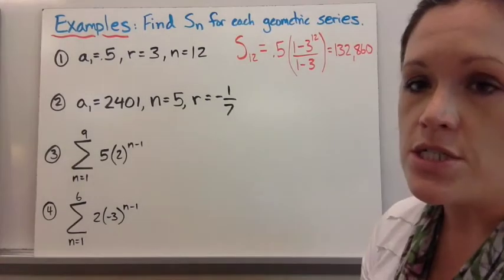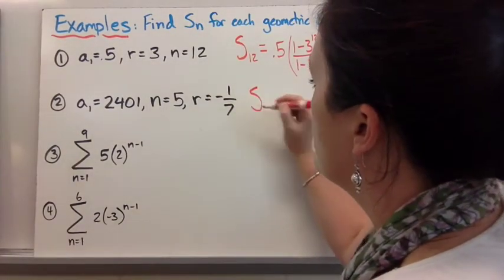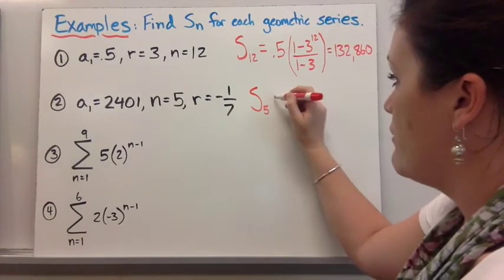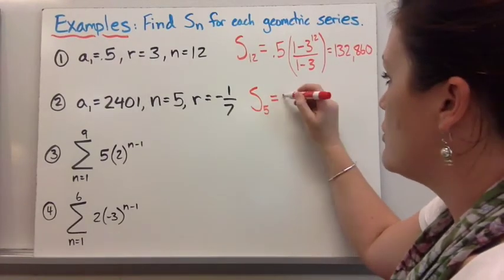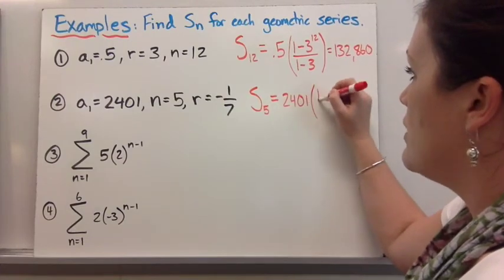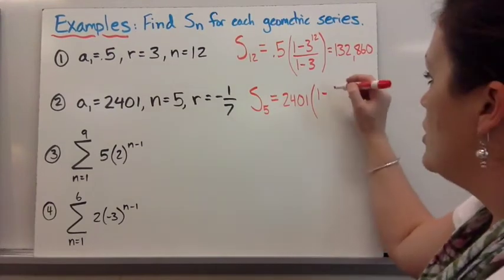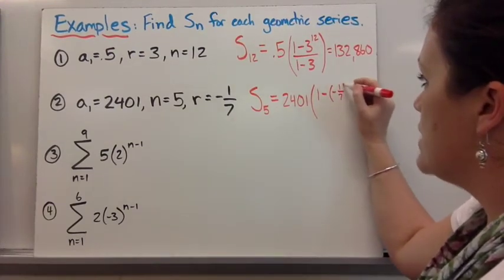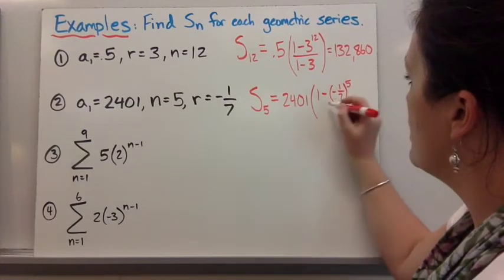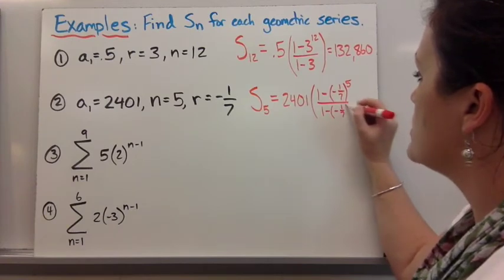Number 2 is another one that just lists out the information. So if we fill in s, we want the sum of 5 terms, because they gave us n equals 5. Our first term is 2,401. We have 1 minus r, but it's a negative this time. When it's a negative, you want to wrap it up in some parentheses to keep it safe. And 5 is our exponent over 1 minus, and then negative 1 seventh again.